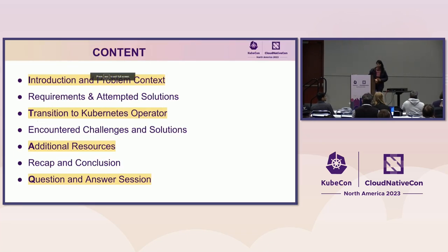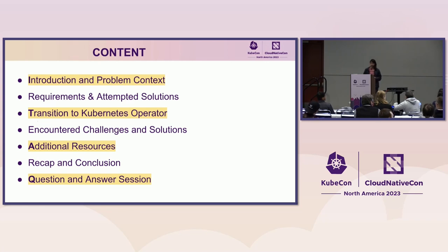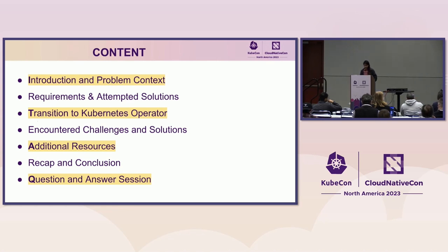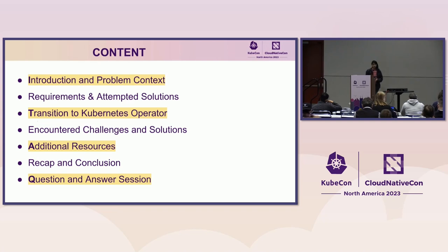The content of this talk: I will be sharing the problem context, where we started off, what were the alternative solutions apart from writing a Kubernetes operator, how they did not work for us, and how we transitioned into writing one. That was just the half story — the technical challenges started coming after we began implementing the operator and making it production-ready. We'll also look at good resources already available if you want additional reading or are just starting out in this space.